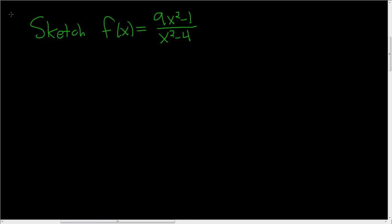We're being asked to sketch this rational function, so let's go ahead and do it. Solution. Whenever you're sketching a rational function, it's a good idea to find the asymptotes and intercepts.